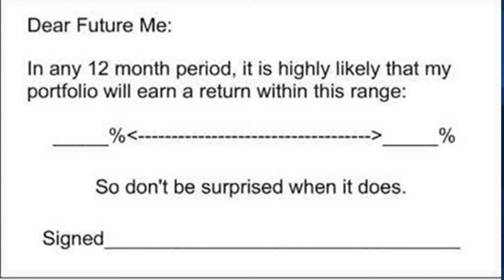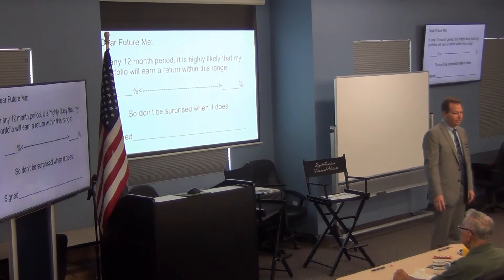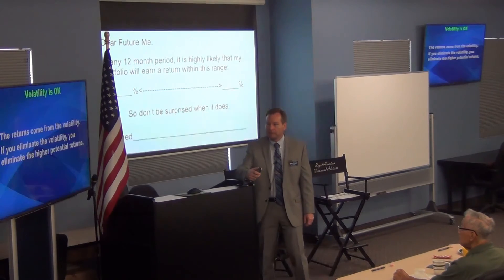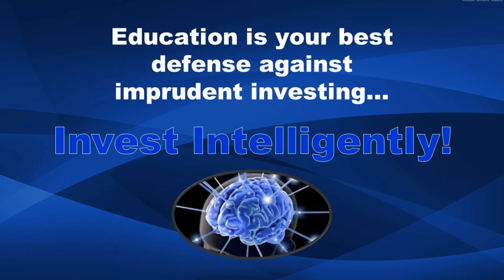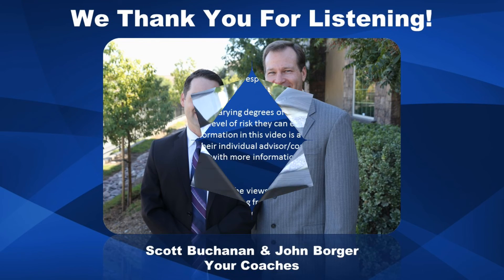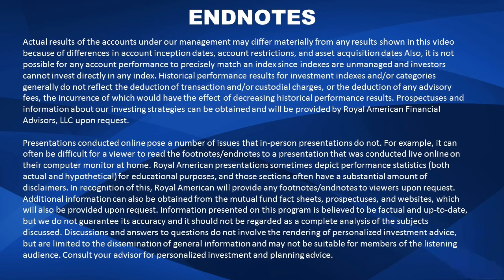We put this in there for you so now you know the ranges. Dear future me: in any 12-month period, it's highly likely that my portfolio will earn between this and this, or anything in between — so don't be surprised when it does. Every once in a while you'll get a negative period. 'I didn't know it could do that' — yes it can. Of course, you can have some pretty good upside too from time to time.